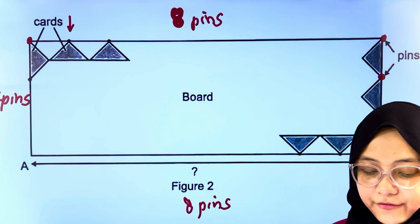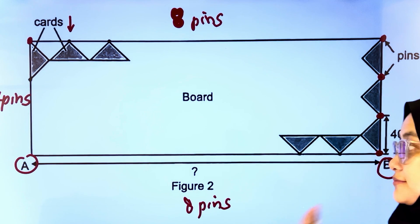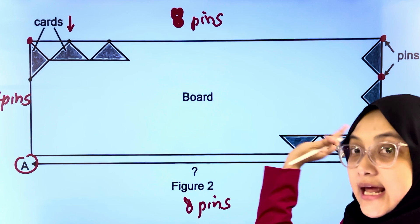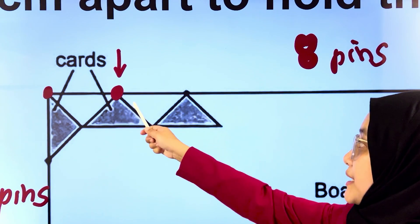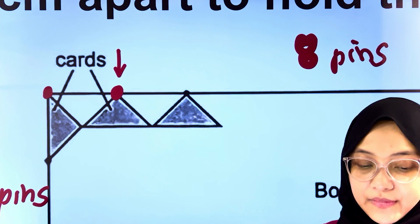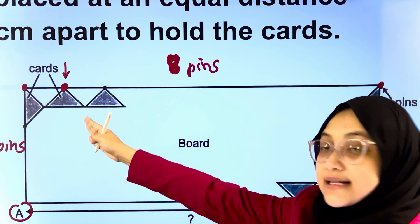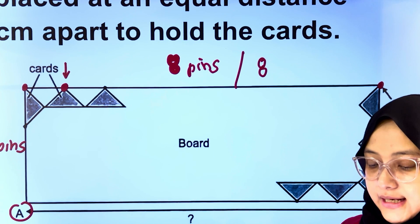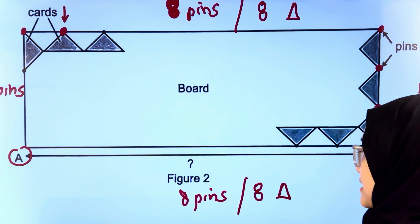We are asked to calculate the length of AB. Let's see how many triangular cuts are placed along the length. Look carefully at how the pin is arranged. The pin is being placed at the tip of the triangular cut, and eight pins were being used. Hence, there will be eight triangles arranged in this way along the length. Eight triangles, which means another eight triangles at the bottom here.